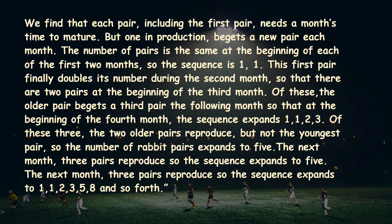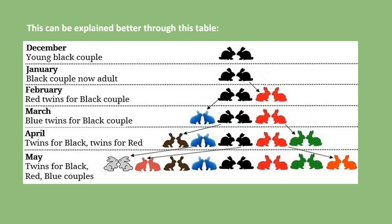This may sound a little confusing, so I have formulated a table for you so you can understand it better by looking at it. Here we have the first pair, which then becomes an adult. The first pair gives birth to the second pair, and then gives birth to another pair the next month. The second pair matures and then gives birth to the next pair. So if you see the sequence, it is 1, 1, 2, 3, 5, 8, and so on and so forth till the 12th month.